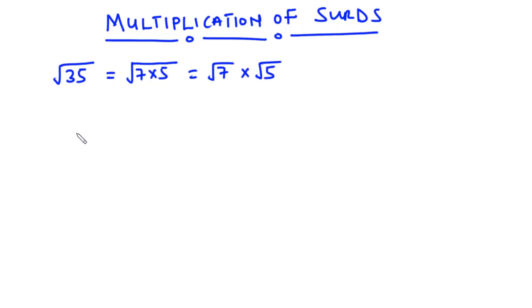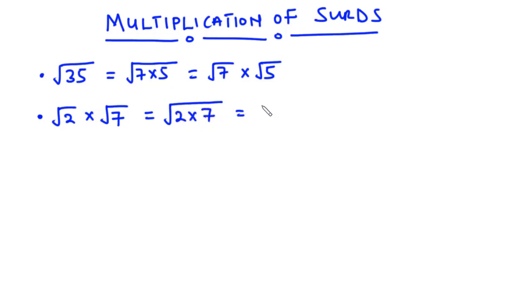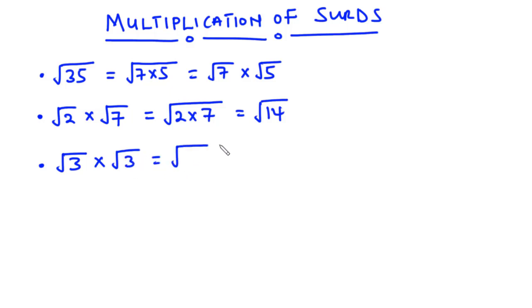Now in the reverse approach, if you have the square root of 2 times the square root of 7, then this is equal to the square root of 2 times 7, which is equal to the square root of 14, because 2 times 7 is equal to 14. Again, if you have the square root of 3 multiplying the square root of 3, that is equal to the square root of 3 times 3, which is equal to the square root of 9. Now the square root of 9 is equal to 3.